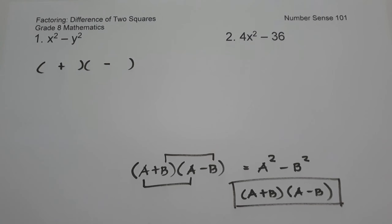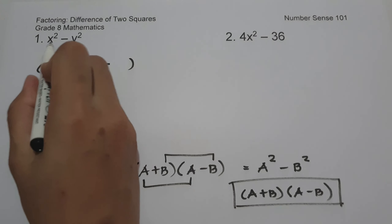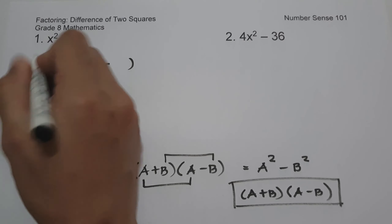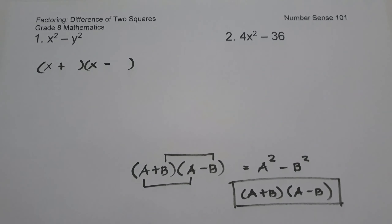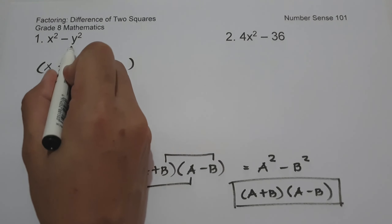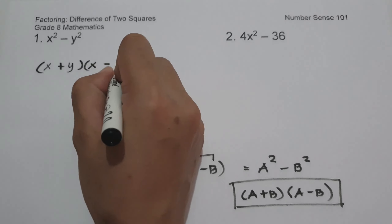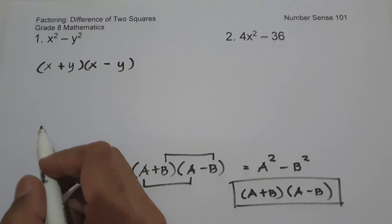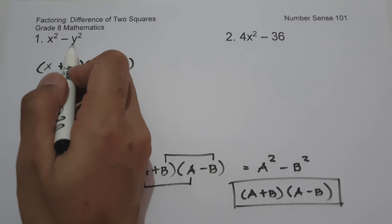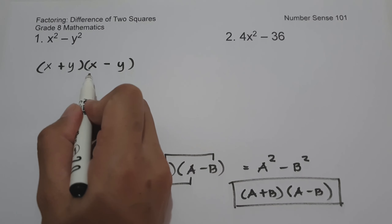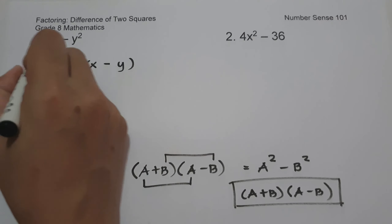To find the square root of a variable, let us simply divide the exponent by two. So the square root of x squared is x, and the square root of y squared is simply y. That means the factored form of x squared minus y squared is simply the quantity x plus y times the quantity x minus y, and this will be our answer.